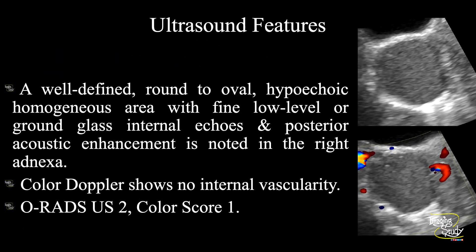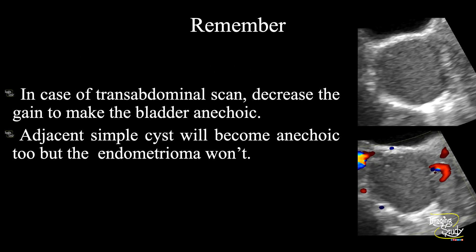In summary: a well-defined round to oval hypoechoic homogeneous area with fine low-level or ground-glass internal echoes and posterior acoustic enhancement is noted in the right adnexa. The right ovary could not be separately visualized. Color Doppler shows no internal vascularity. These features are consistent with endometrioma, with IOTA score of 2 and color score of 1. Take-home message: on trans-abdominal ultrasound, try decreasing the gain to make the urinary bladder anechoic — this will clear your confusion. Adjacent simple cystic structures will become anechoic, but endometrioma will not.